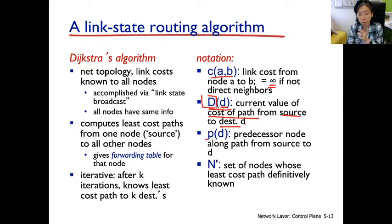Now p(d) here. D again is the destination and p(d) is to indicate for this router to reach the destination d along all the routers on the path, what is the previous router before reaching d? N prime is the set of nodes whose least cost is already known.